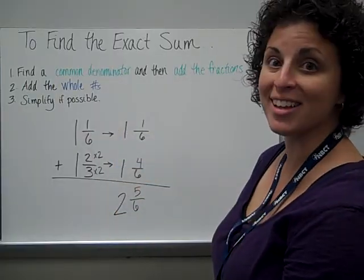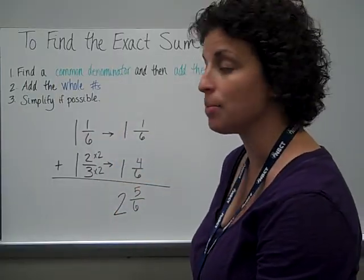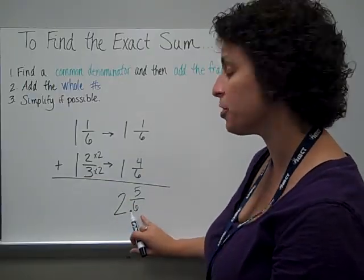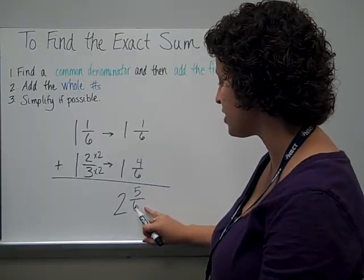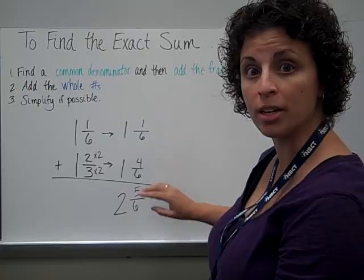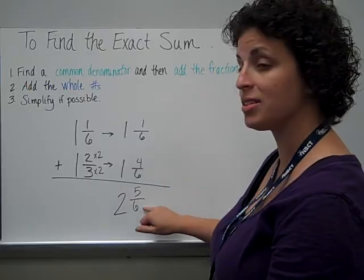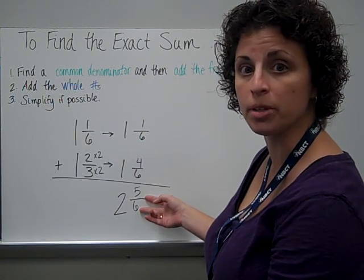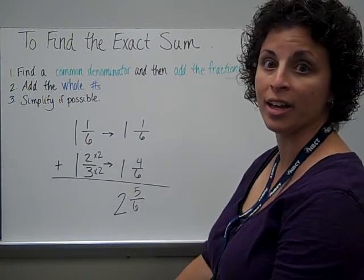Always, the last step when we're working with fractions or mixed numbers, simplify if possible. Whole numbers don't get simplified, so I'm looking here at the fraction. 5, 6. If you remember, I said whenever the numbers are consecutive, meaning side-by-side numbers, 5, 6, when we were counting, this fraction is already in simplest form. So I don't need to simplify it anymore.